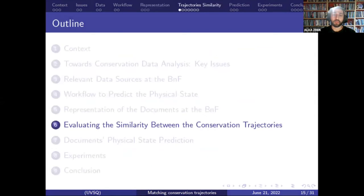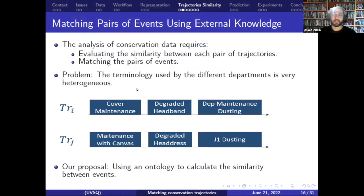To analyze the conservation trajectories and detect correlations between trajectories and document physical state, we need to calculate their similarities. The evaluation of similarity between each pair of trajectories also requires the evaluation of similarity between each pair of events. In this figure, the two trajectories appear not similar because none of their events are the same, but according to domain experts, some events are equivalent and the two trajectories are actually very similar. This variation in terminology is due to different terminology used by BNF departments and the evolution of event names over time.